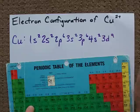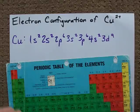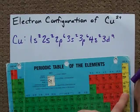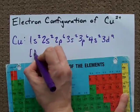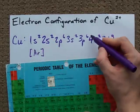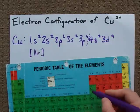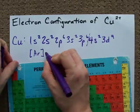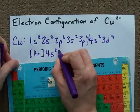Now I'm going to abbreviate that using shorthand notation. If I just write [Ar], that covers me up to here, up to the 3p⁶. Then I can just write 4s² 3d⁹.